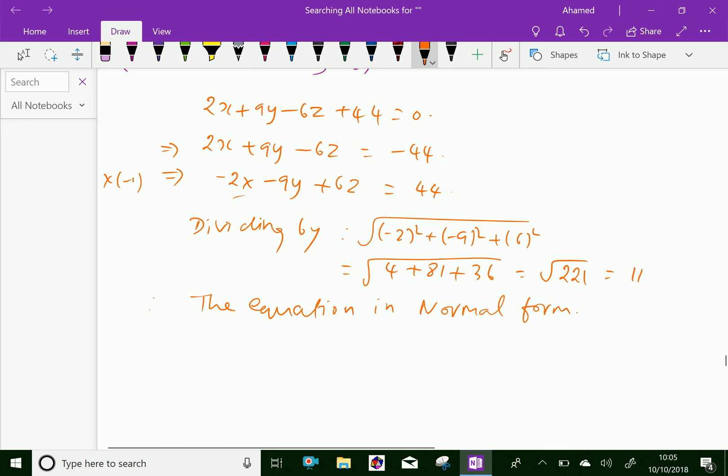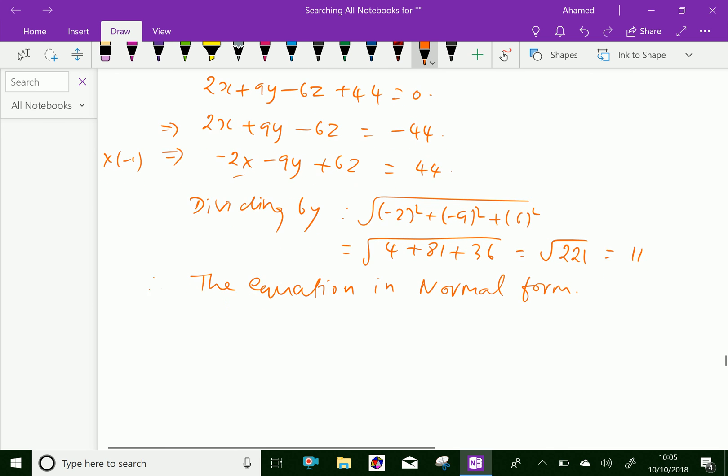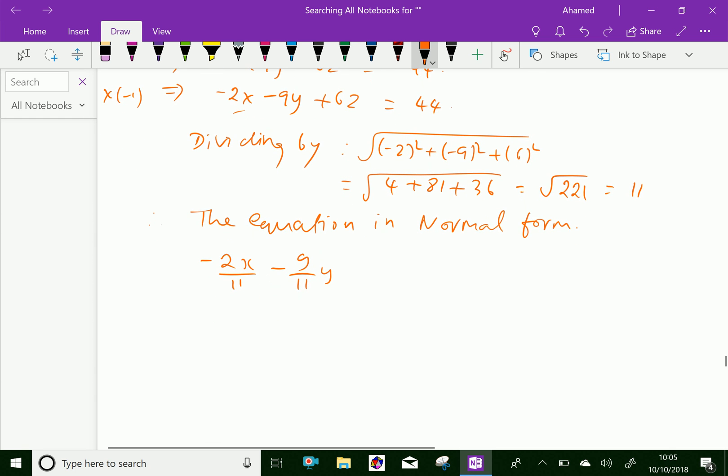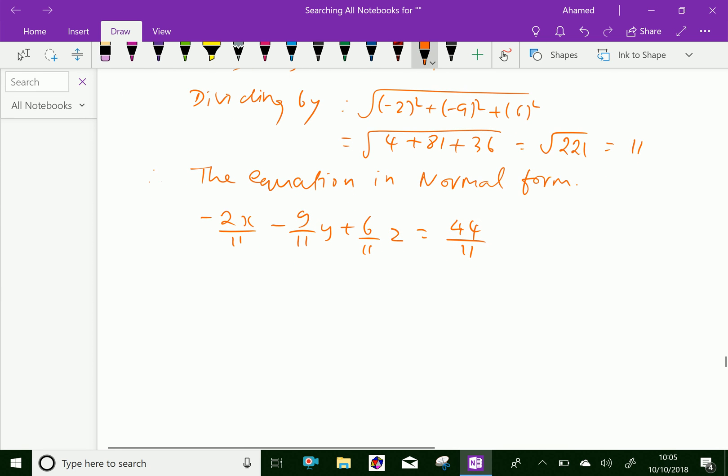Therefore the equation in normal form is given by minus 2x over 11 minus 9 over 11 y plus 6 over 11 z equals 4.